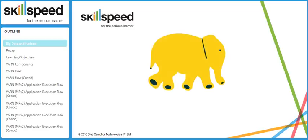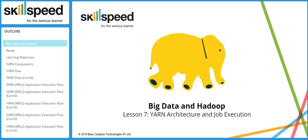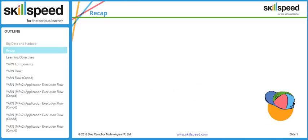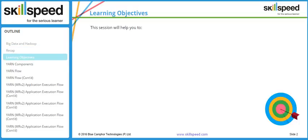Welcome to lesson seven, module four of the Big Data and Hadoop Developer course. In this particular lesson we'll be looking at YARN architecture and job execution. In the previous lesson we learned what YARN is and its architecture. In this lesson we're going to look at the components of YARN and understand the YARN application execution flow.